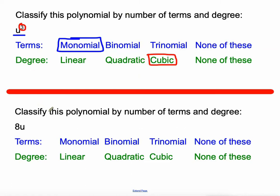Classify this polynomial by number of terms and degree. Well, it's one term again. So this is a monomial. And then it is to the first degree because it's u to the first. So we call that linear. So this is a linear monomial.